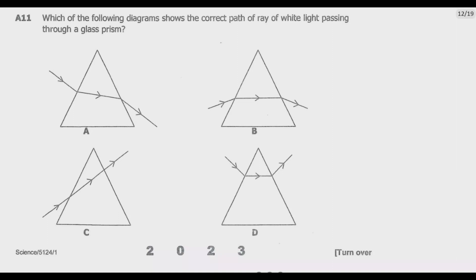Question A11: Which of the following diagrams shows the correct path of ray of white light passing through a glass prism? We're looking for the correct path of ray of white light. The key principle you need to know is that the incident ray bends towards the normal when it enters the prism and bends away from the normal while leaving the prism. Remember the normal is the line which is perpendicular to the surface.